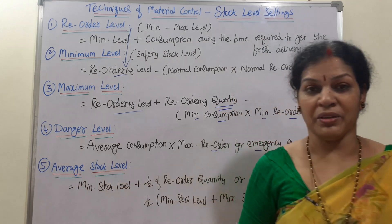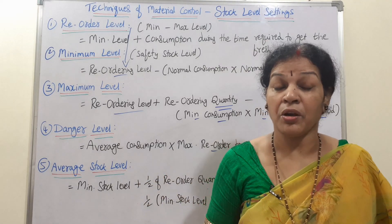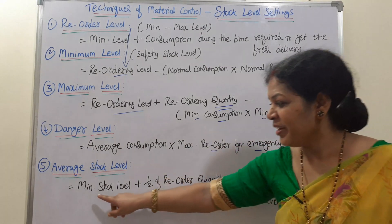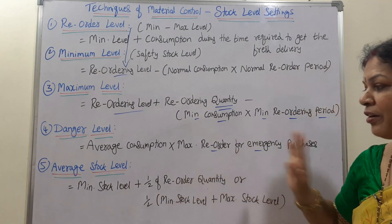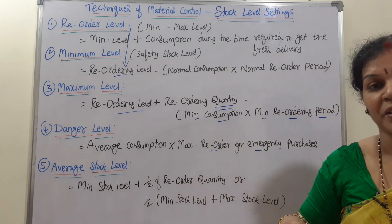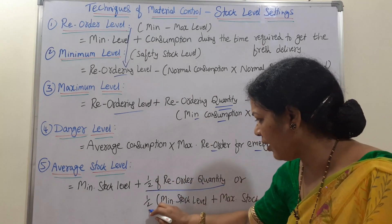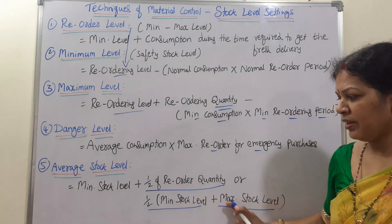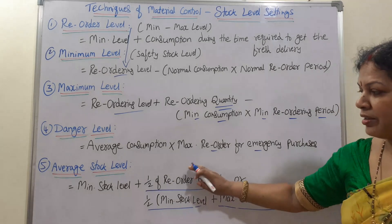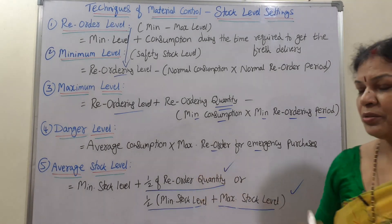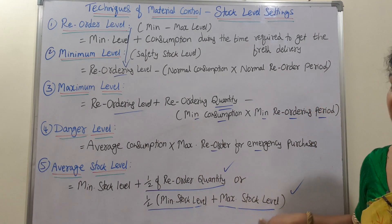The fifth one is average stock level — how much stock to keep on average. The formula is: minimum stock level plus half of reorder quantity. Alternatively, you can use: half of minimum stock level plus maximum stock level. Either formula can be used to get the average stock level.